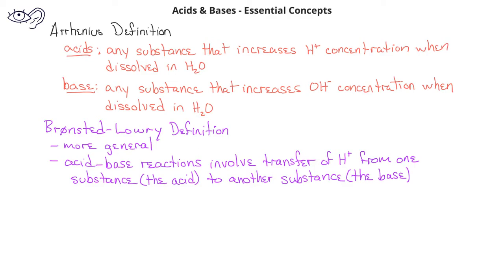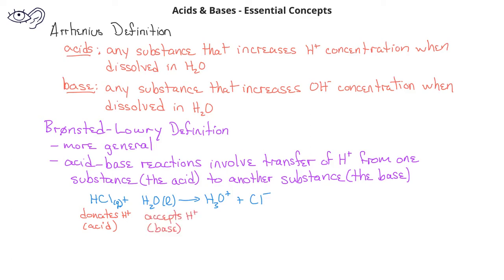For example, hydrogen chloride in the presence of water will produce hydronium ions and chloride ions. In this case, the acid is HCl because it donates a hydrogen ion to the water. On the other hand, the water acts like a base because it accepts the hydrogen ion from the HCl.